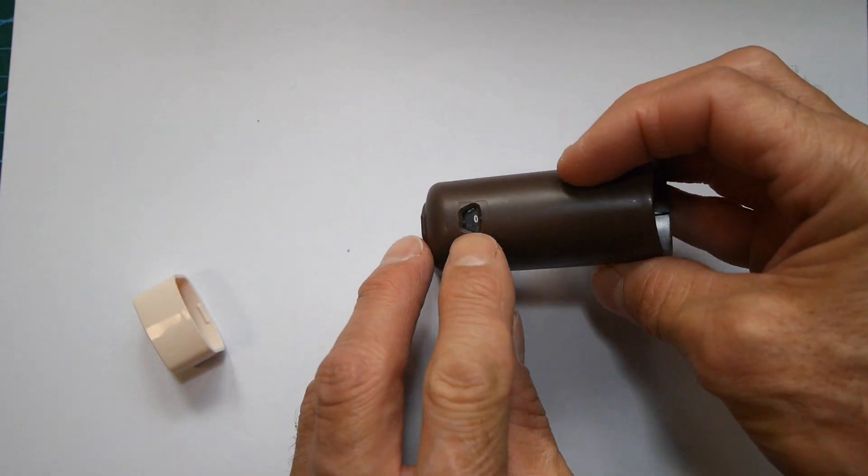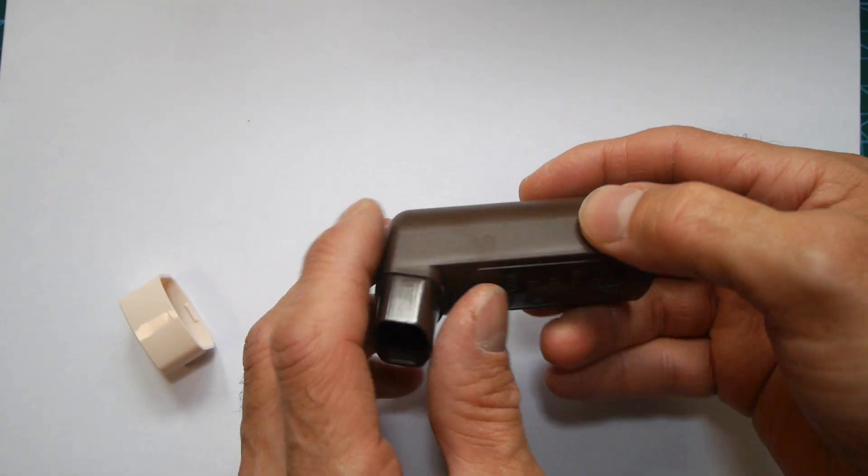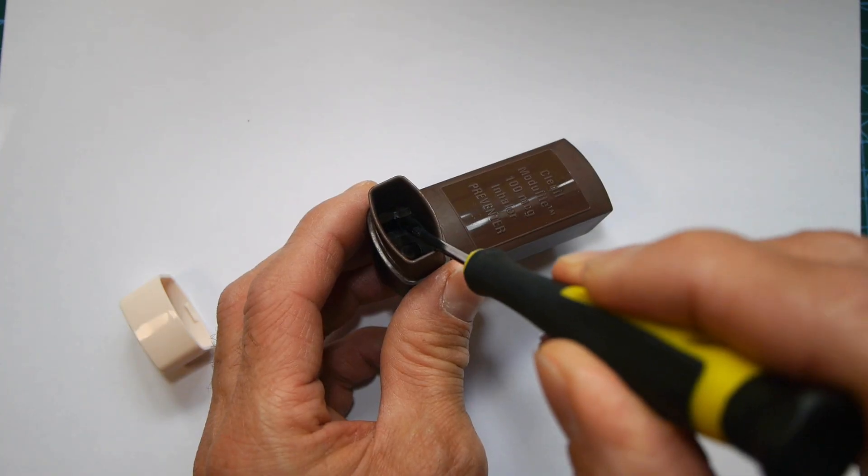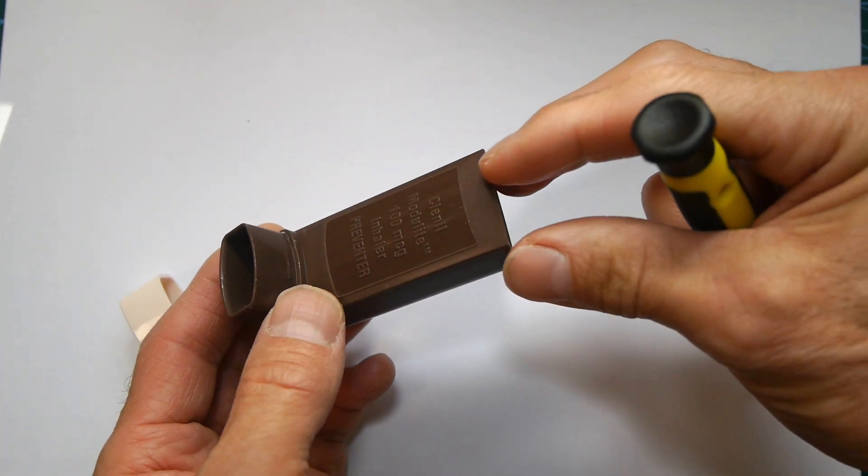It also contains the counter mechanism and so it's white but the counter wheel is actually black. To get that out I've got to get a screwdriver in here and just flick a couple of tabs inside that will release the mechanism and then it'll come out this way.